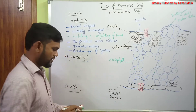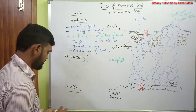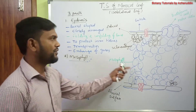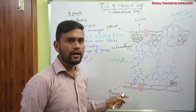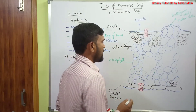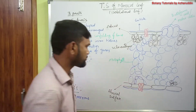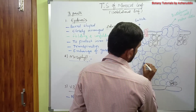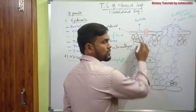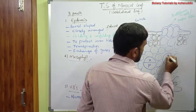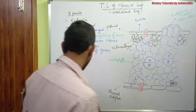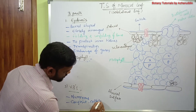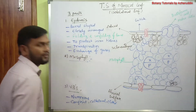Coming to vascular bundles: vascular bundles are numerous and present in the form of veins. In monocot leaves, veins are parallelly arranged. Vascular bundles are conjunct, collateral, and closed type. Xylem is present towards the upper side and phloem is present towards the lower side.